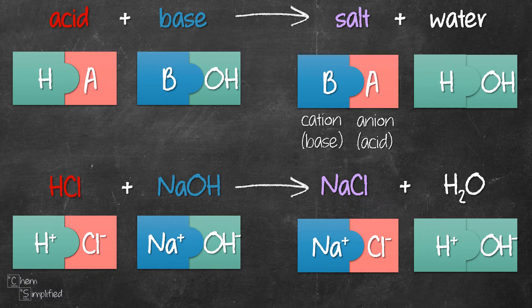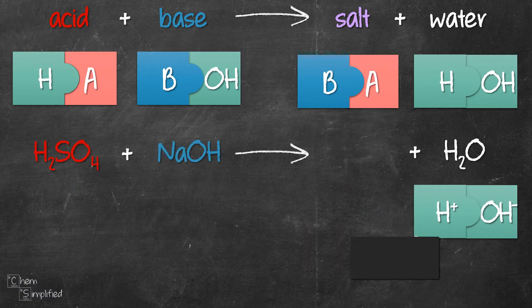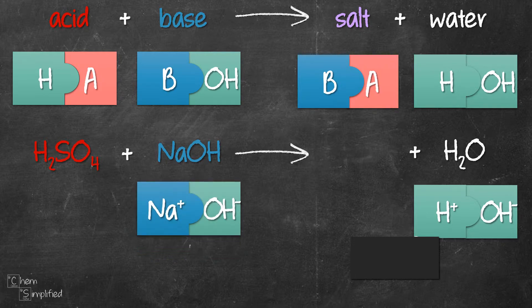What happens if we have different number of charges for A and B ions? We'll take a look at the neutralization between H2SO4 and NaOH. NaOH forms Na+ and OH-.